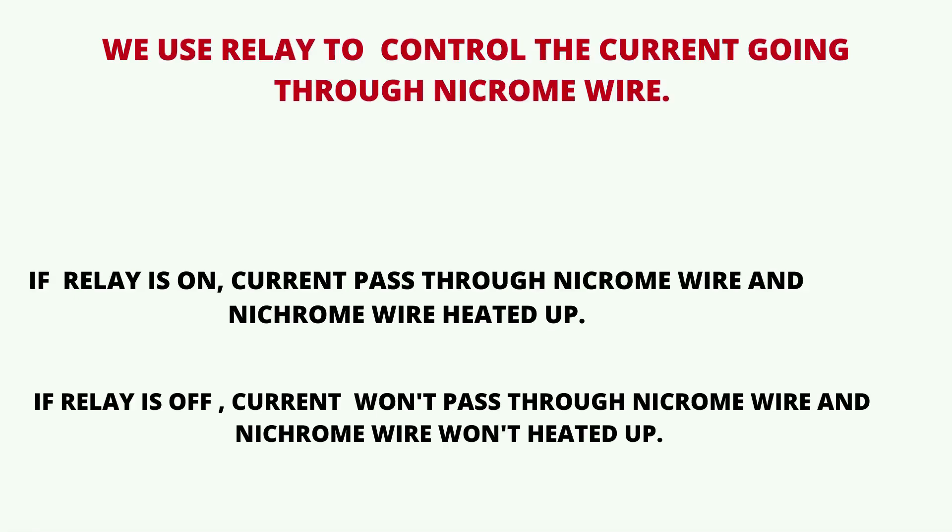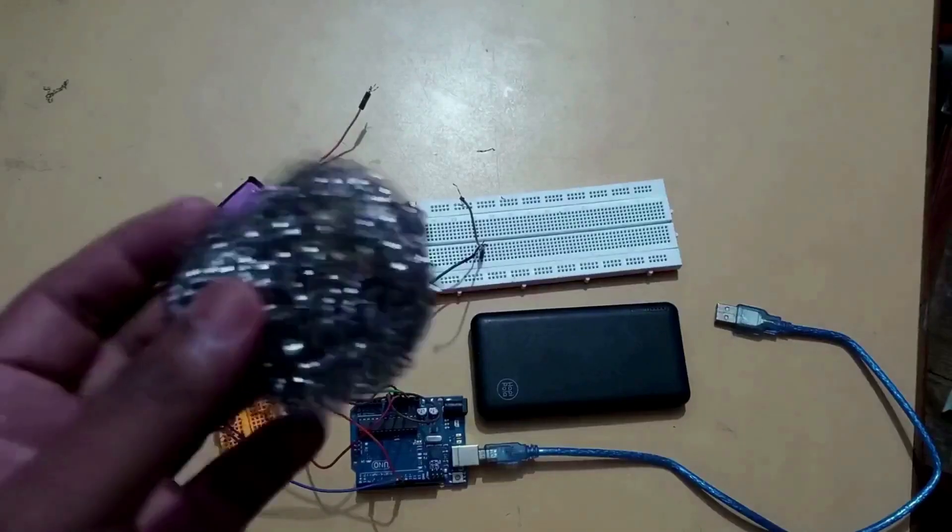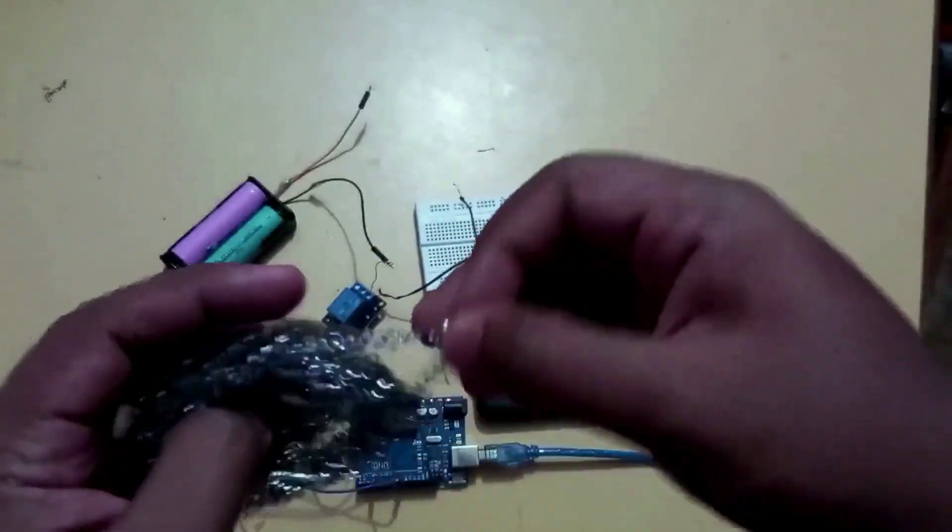When the relay is on, current passes through the nichrome wire and the nichrome wire heats up. If the relay is off, nothing happens. Since nichrome wire is expensive, you can use steel wool for this project.